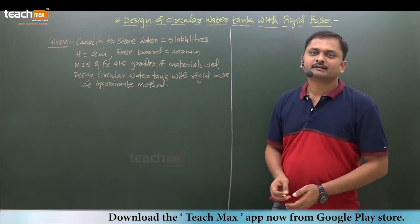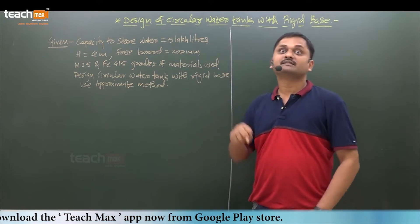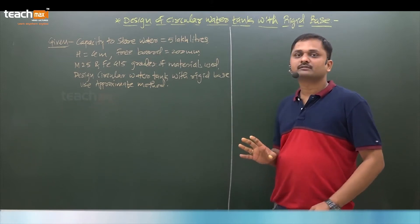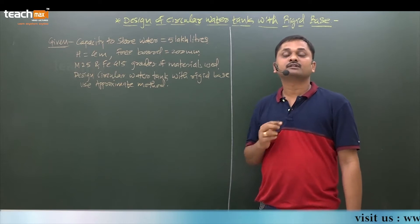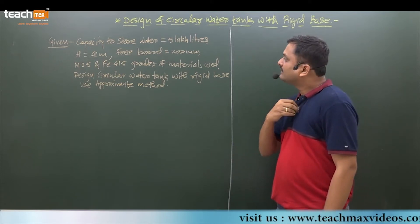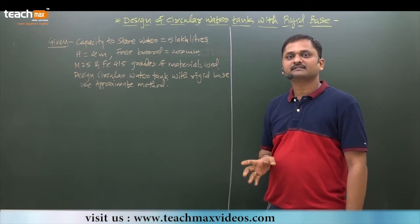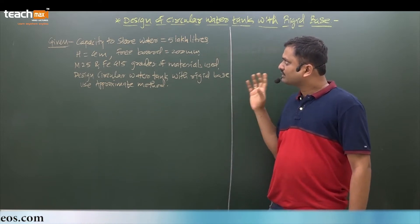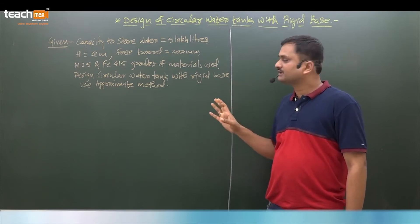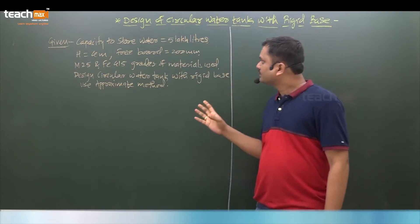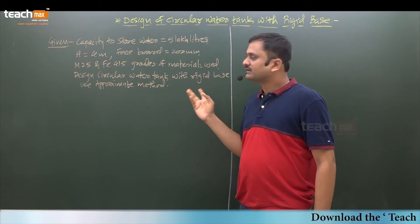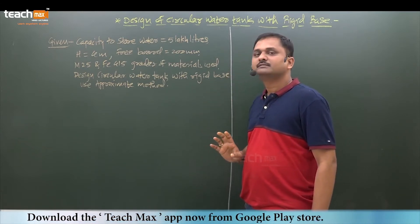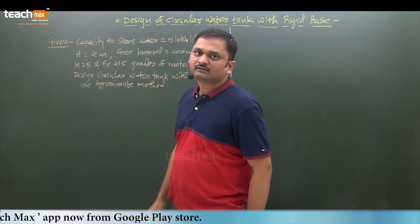Hello and welcome to Teach Max Videos. Let us design a circular water tank with rigid base. In this lecture, we are going to focus mainly on design of circular water tank with rigid base. The given data: capacity of water to store is five lakh liters, height four meters, freeboard 200 mm, grade of material M25 and Fe415.